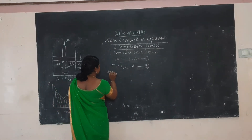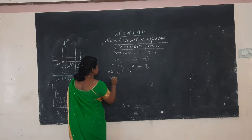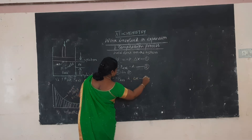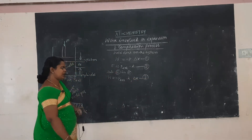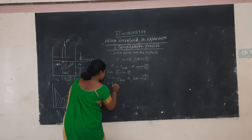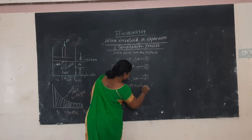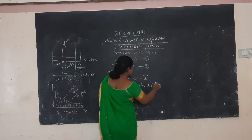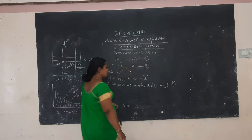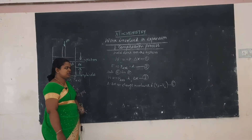Substituting equation 2 into equation 1, we get: W = -P_ext × A × Δx — that is the third equation. Here, A × Δx represents the change in volume, which equals V_F minus V_I — that is the fourth equation.